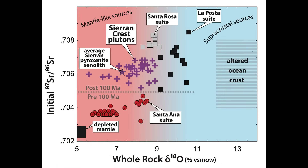Here is a plot of whole-rock δ18O oxygen versus initial strontium. Note the elevated strontium values in the Sierra Crest and La Posta suites compared to the Santa Ana arc suite of the Peninsular Ranges. Note also that Sierran pyroxenite xenoliths from the mantle, which were brought to the surface during the Miocene, have elevated strontium isotopes similar to those of the post-collisional Sierra Crest plutons.